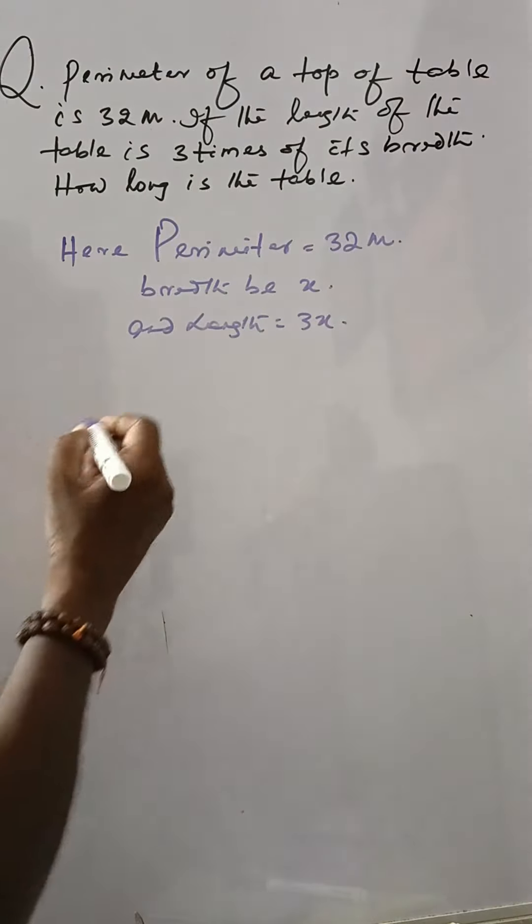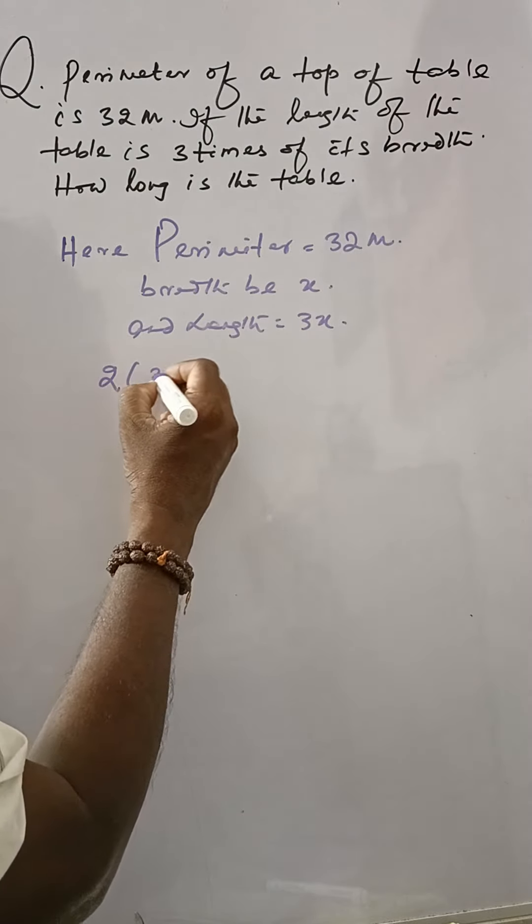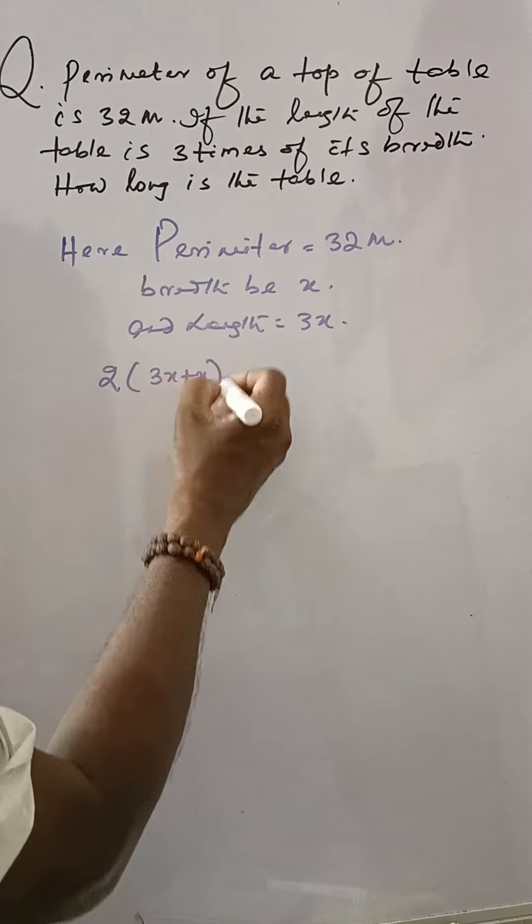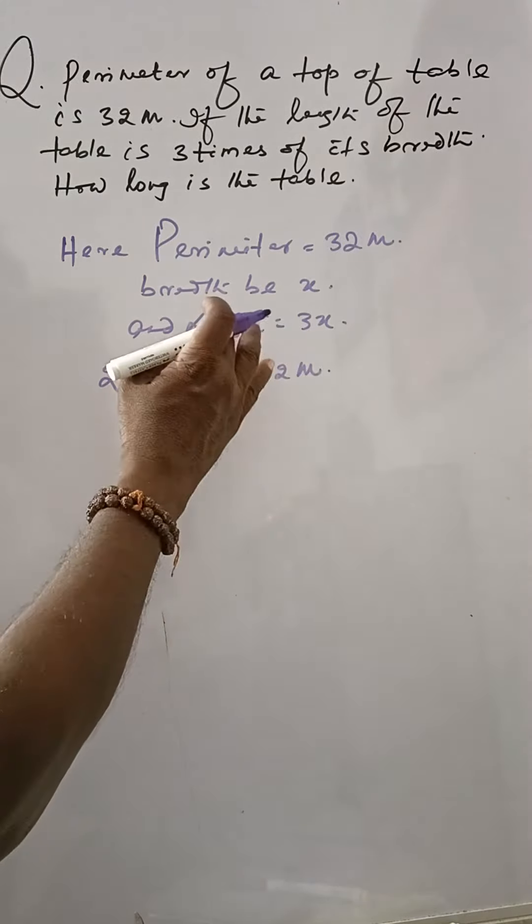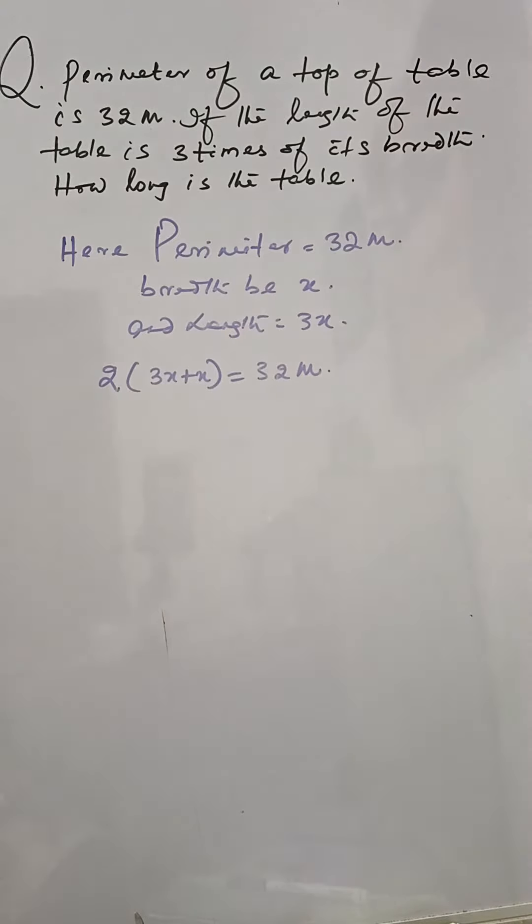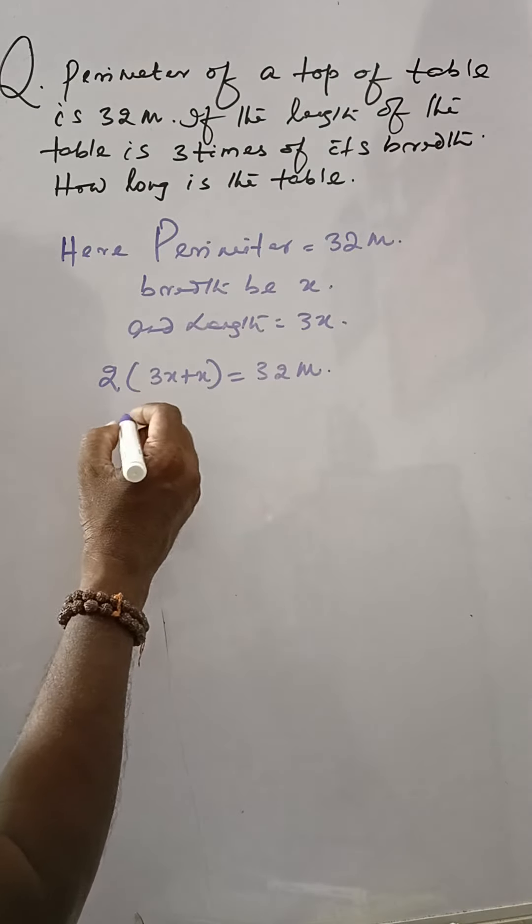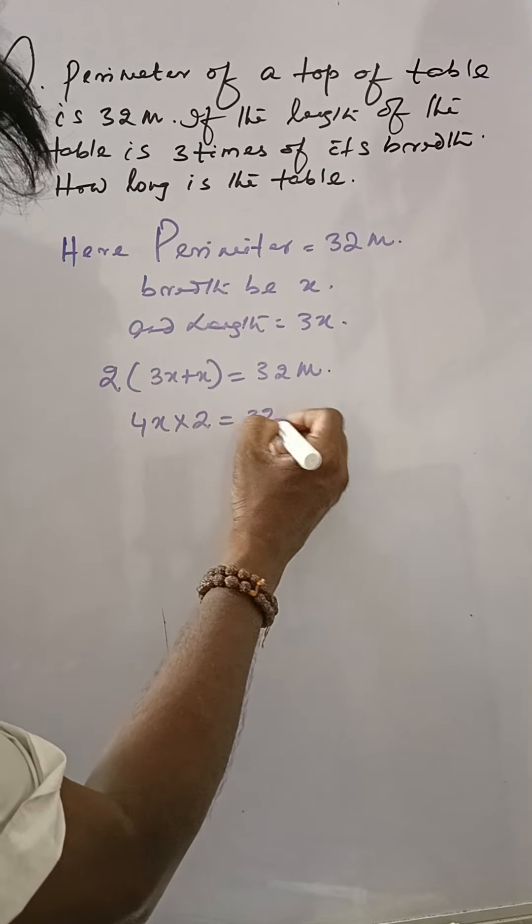Then as per the statement, 2 into (3x plus x) equals 32 meters. This means perimeter equals 2 into (length plus breadth) in case of a rectangle. So this is 4x into 2 equals 32.